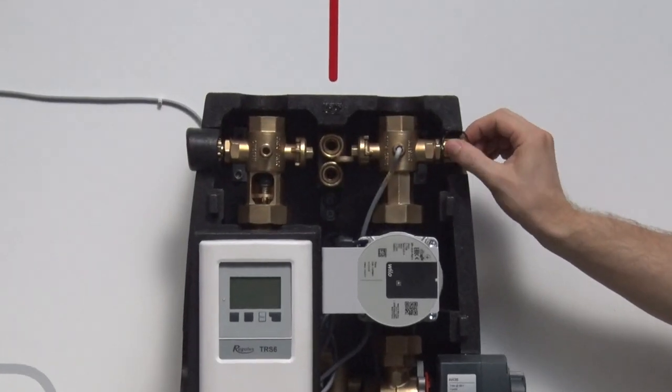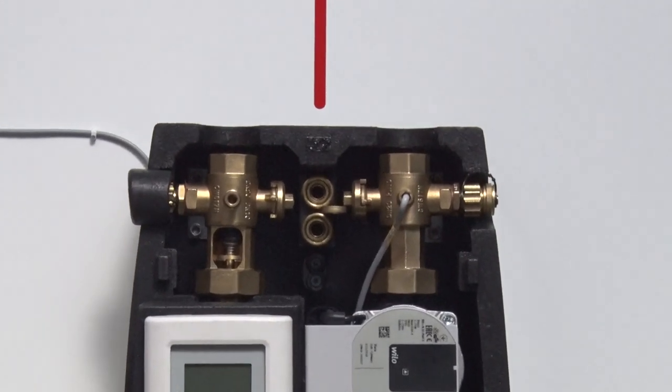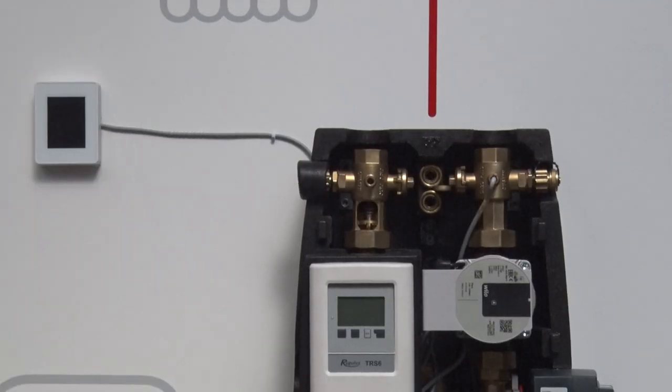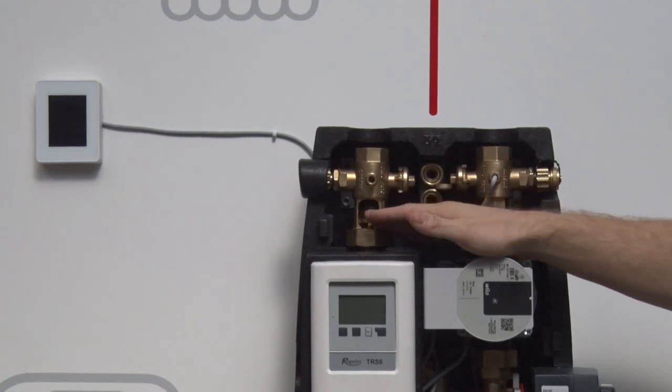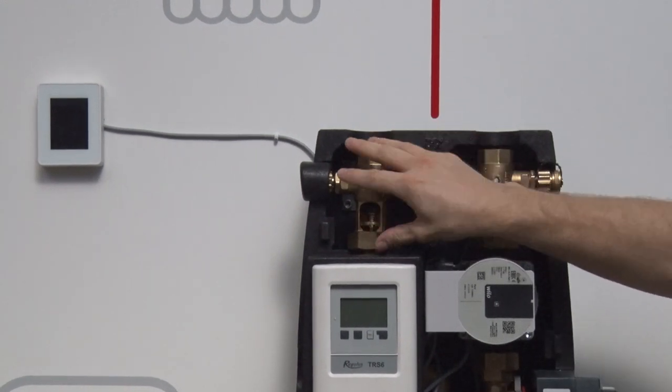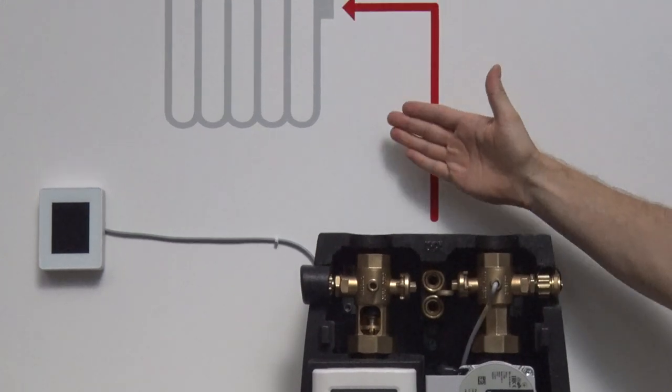The valves are operated by turning the nut. A non-return valve is a part of the valve on the return line from the heating system.